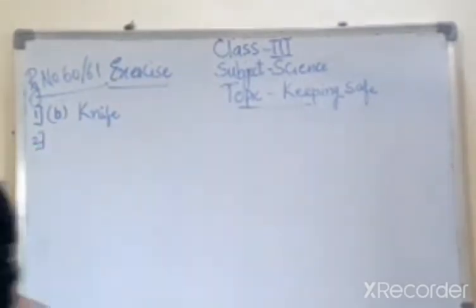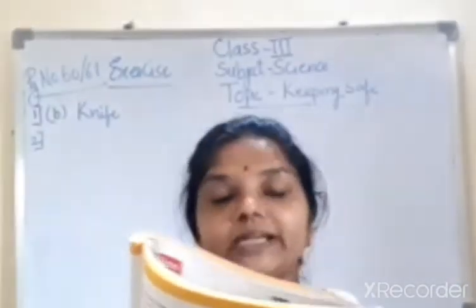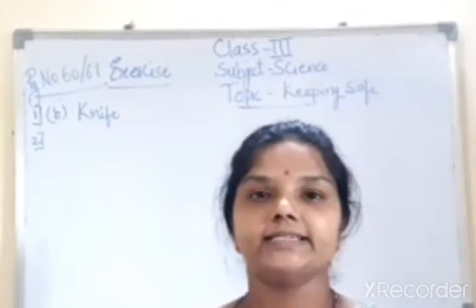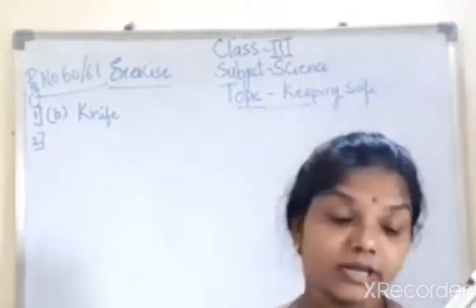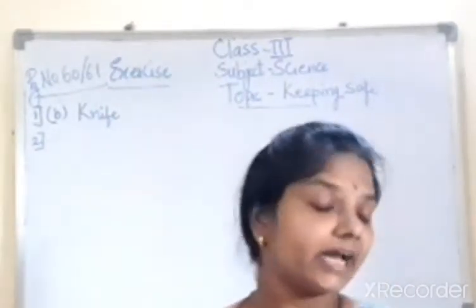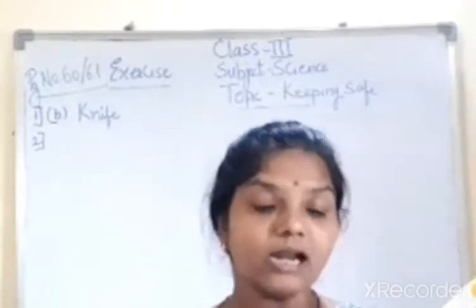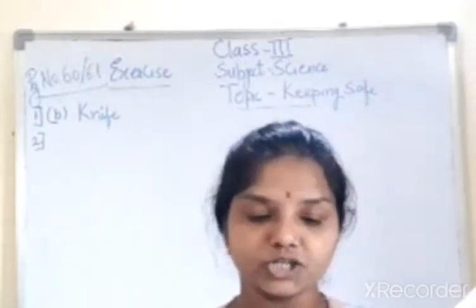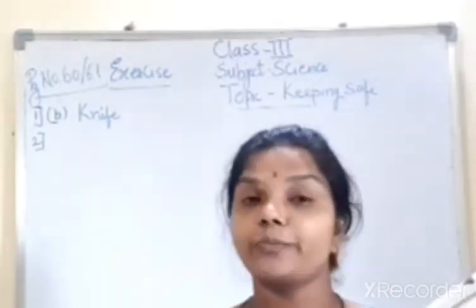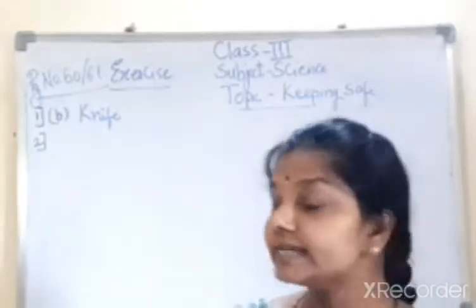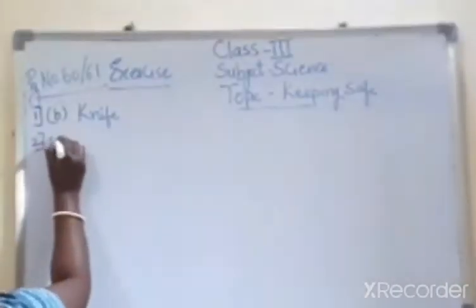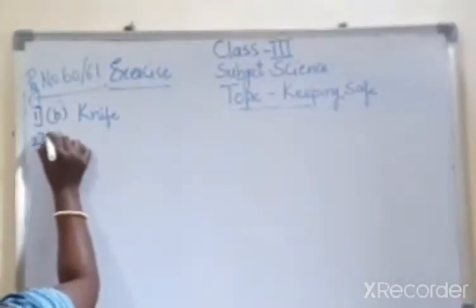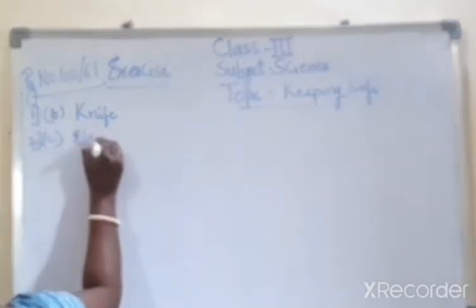Second question: which of the following should not be touched with wet hands? The options are rubber ball, toothbrush, electric switches, or pencil. We should not touch electric switches with wet hands. So the answer is C, electric switches.